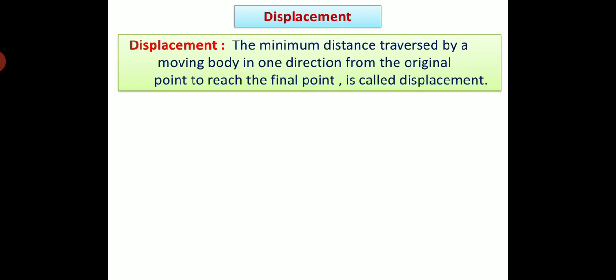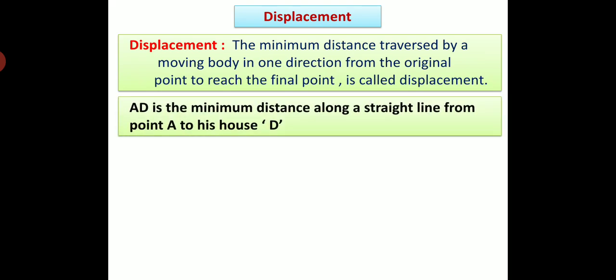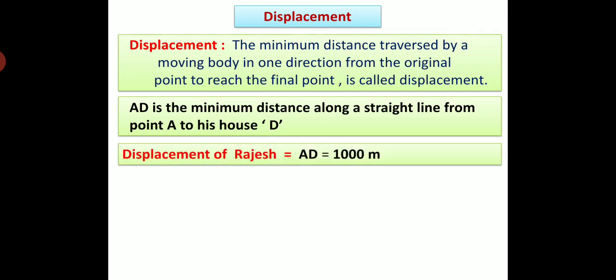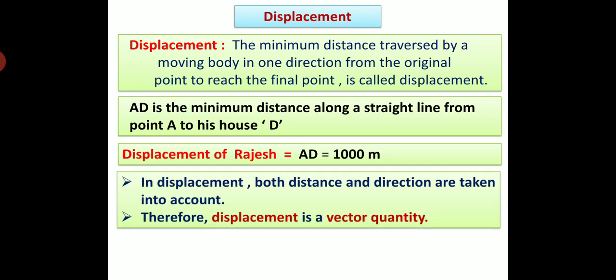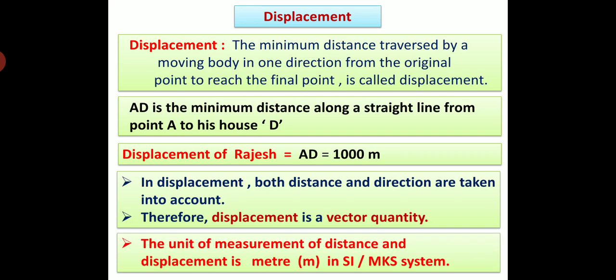Displacement: The minimum distance traversed by a moving body in one direction from the original point to reach the final point is called displacement. AD is the minimum distance along a straight line from point A to his house D. So, displacement of Rajesh is AD, equal to 1000 meter. In displacement, both distance and direction are taken into account. Therefore, displacement is a vector quantity. The unit of measurement of both distance and displacement is meter in the SI or MKS system.